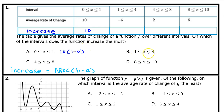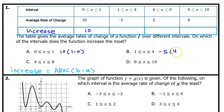On the interval from 1 to 4, the increase will be the average rate of change, which is negative 5 — meaning this is actually a drop — times the width of the interval, which is 4 minus 1. So this is negative 5 times 3, which is negative 15, a fall of 15 units.